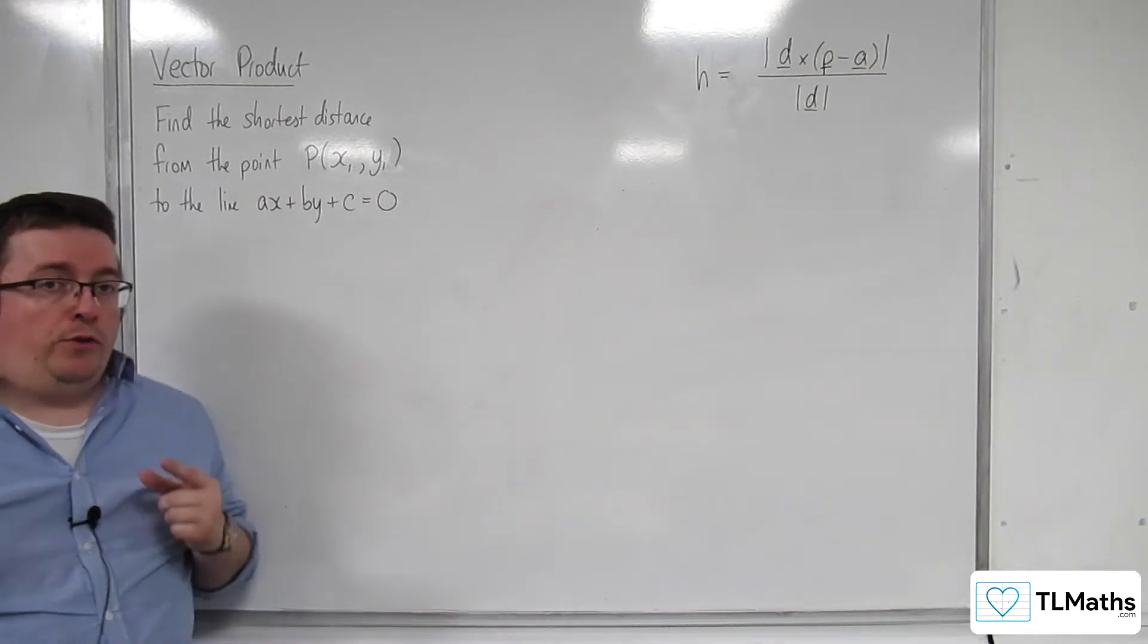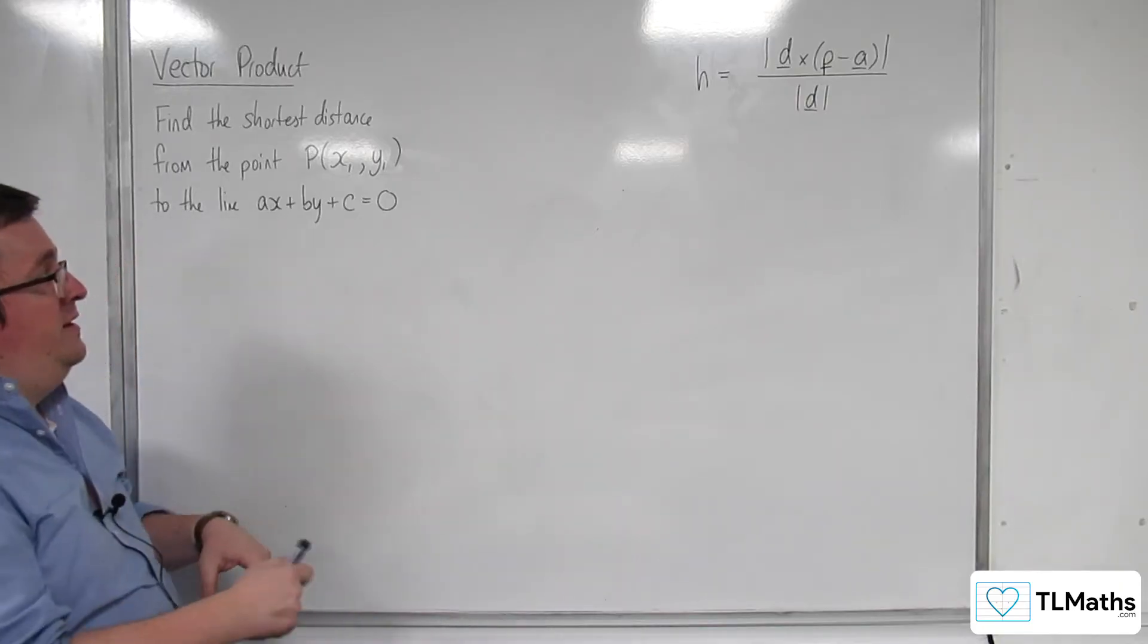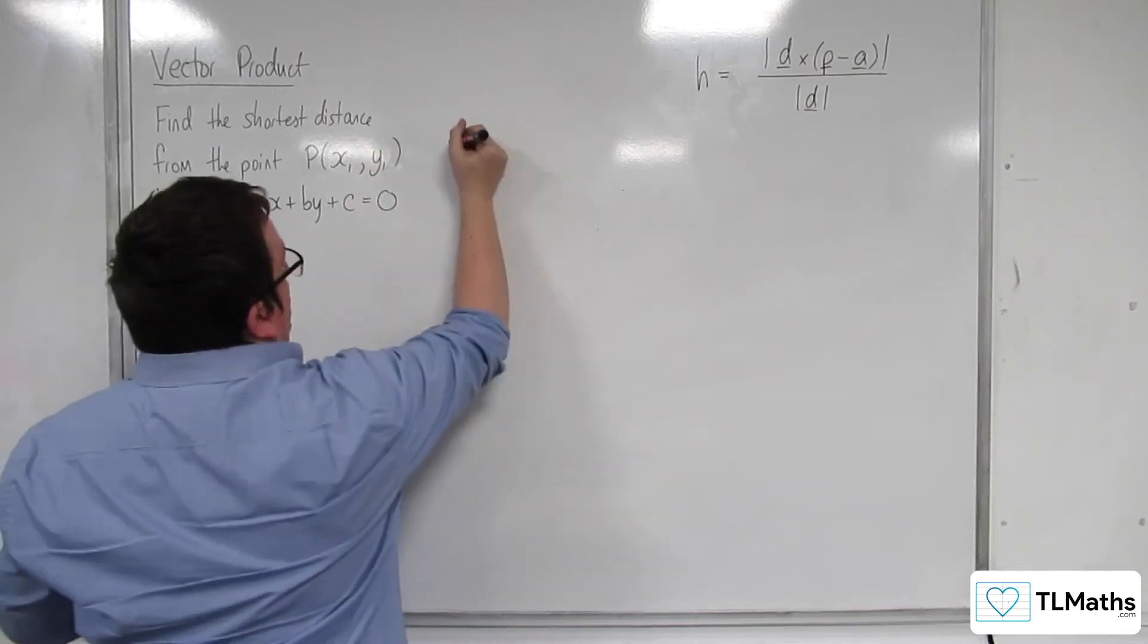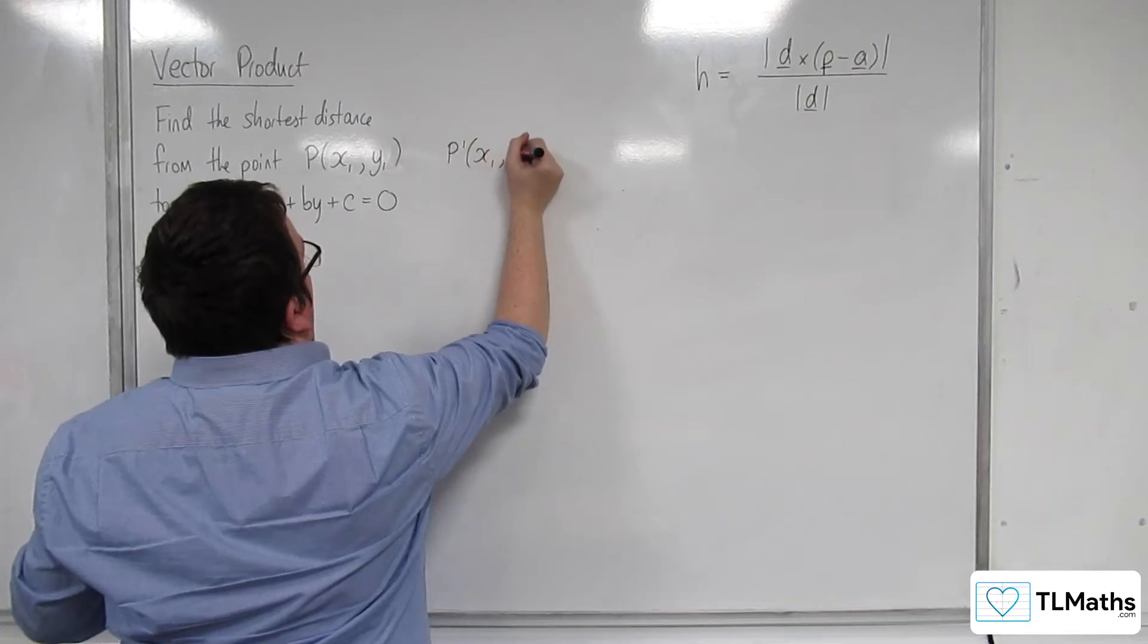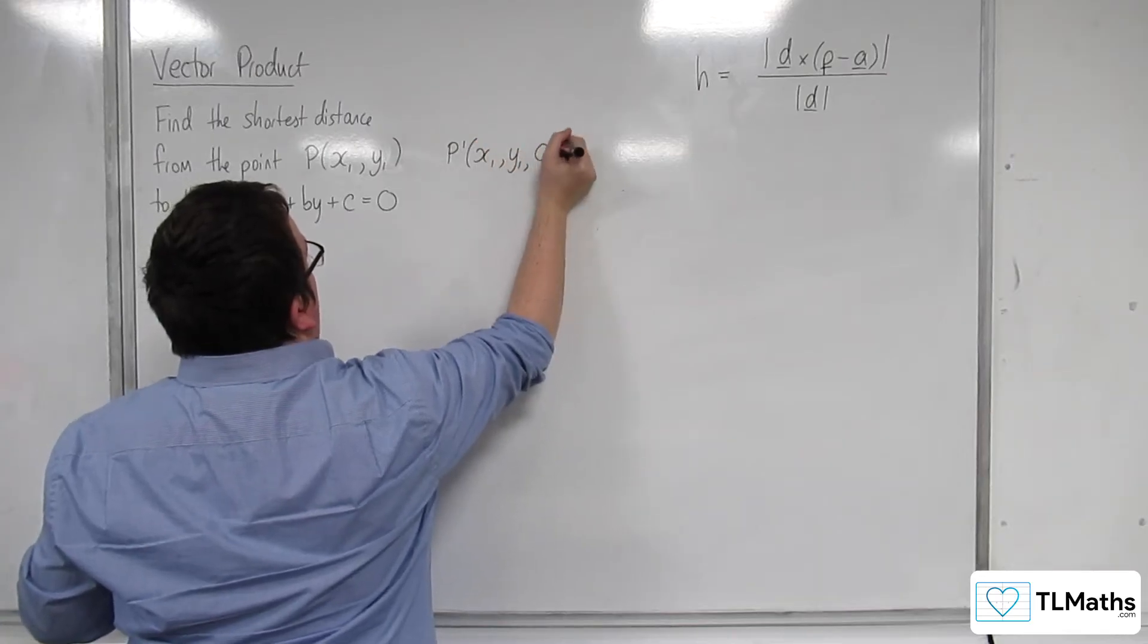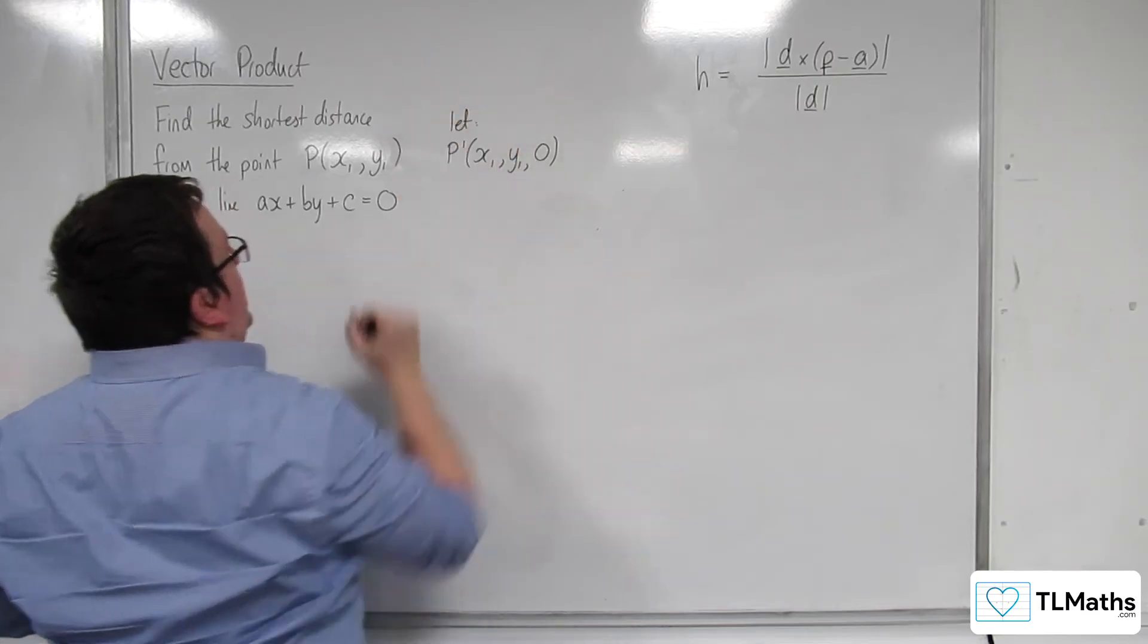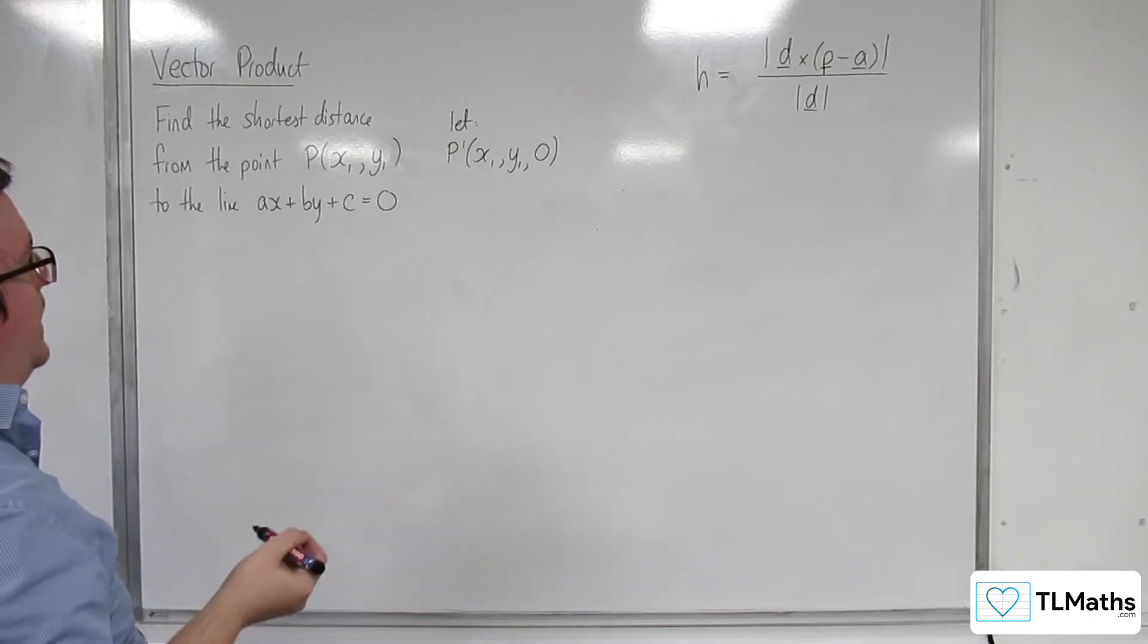So if we go through the stages that we went through in the previous video, the first thing I did was I converted P into a 3D coordinate and I called it P' which has the coordinates x1, y1 and 0 for the z-axis. So, we're going to let P' be that coordinate there.